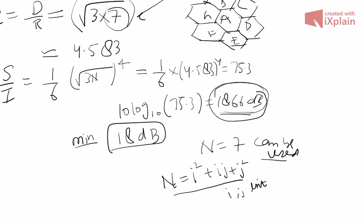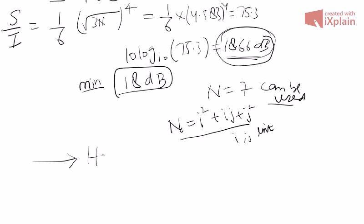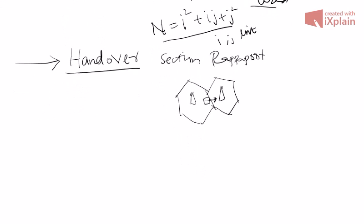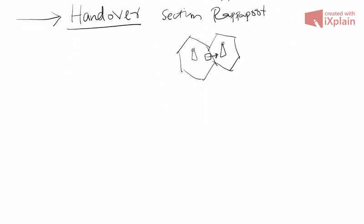Since we have limited time, I will move to something more difficult. As a reading assignment, please study the handover section of Rappaport — there is no big mathematics there. Handover is simply what happens when you are in one cell and move to the next in a car: the base station must decide when handover has occurred. I will go directly to something called small-scale fading effects.